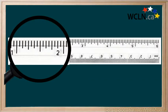In order to measure something accurately, you have to be aware of the number of divisions that each part of the ruler is divided into.